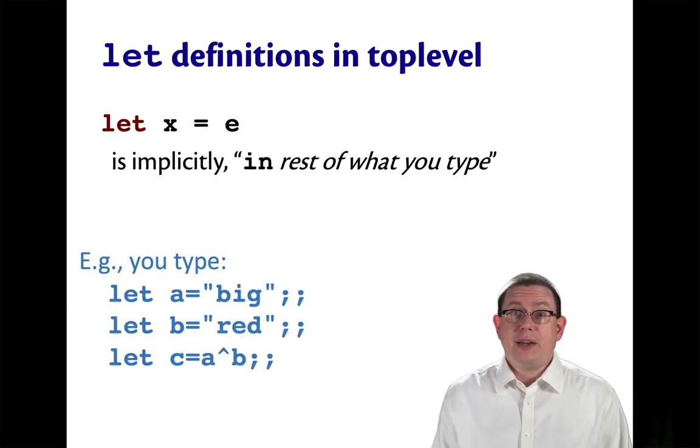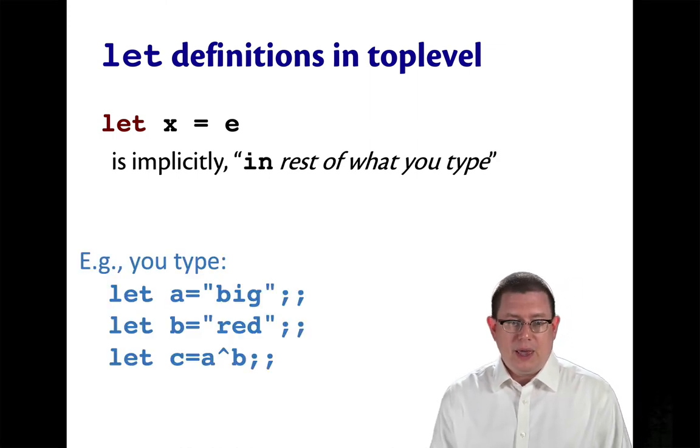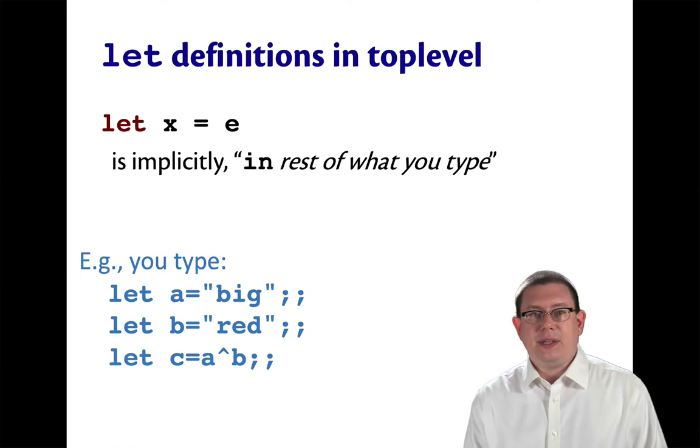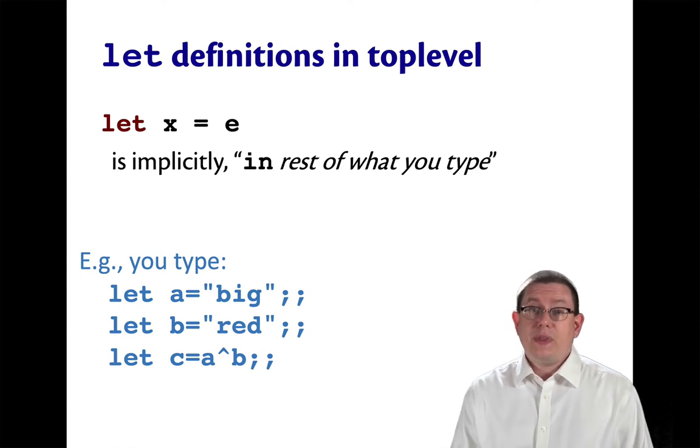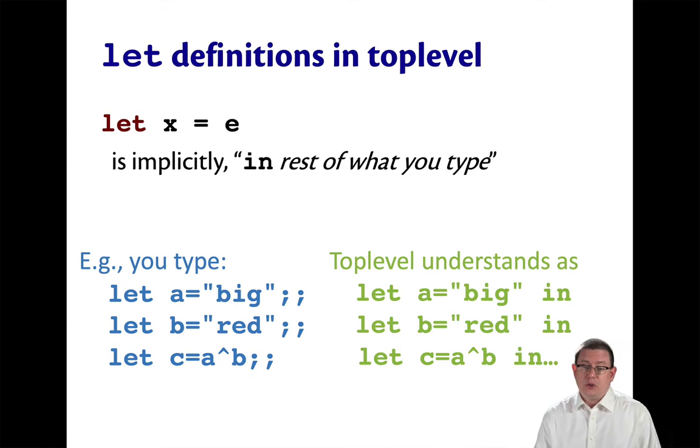So if you have a bunch of let definitions in a row, like a is big, b is red, and then c is a concat b, what that really gets understood as is equivalent to let a equal big in, let b equal red in, let c equal a concat b in, and then we're going to continue on with whatever else is typed in the future.